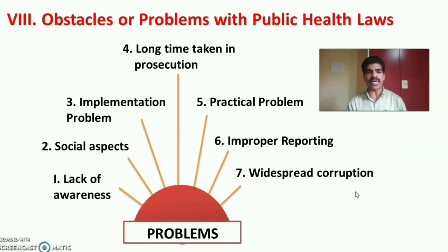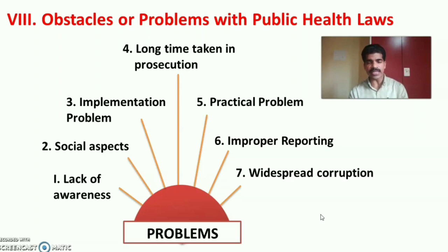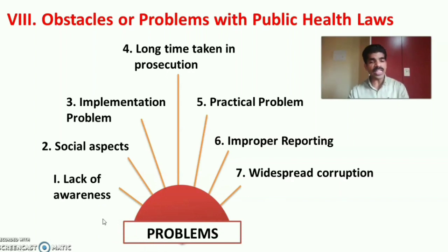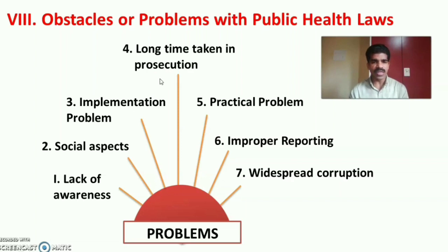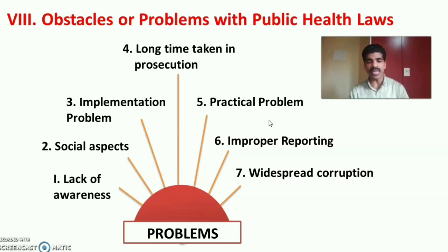Next are the obstacles or problems of public health laws. Public health laws face many hindrances at regional, national and international levels, and even within the political and social systems. There are seven important obstacles: first, lack of awareness of the public about public health laws; second, social aspects related to health matters; third, various implementation problems; fourth, long time taken in prosecutions when cases are filed against those who violate public health laws; fifth, practical problems in implementing and enacting public health laws; sixth, improper reporting of violations; and seventh, widespread corruption even in the field of health and health services.